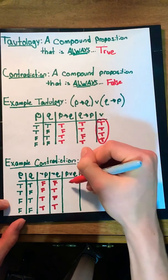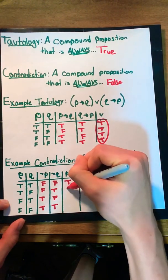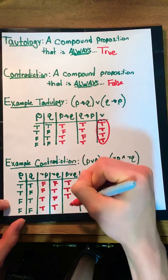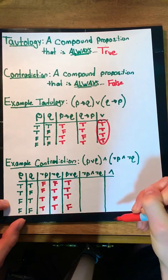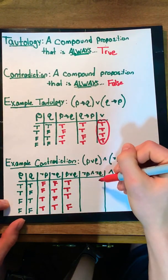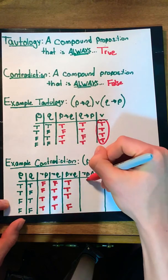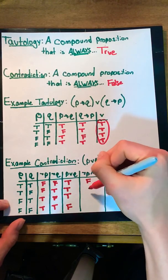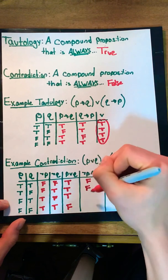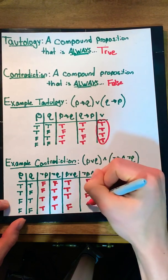When we or p and q together, we get true, true, true, true, and then we and not p and not q together, we get false, false, false, false, true.